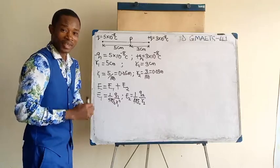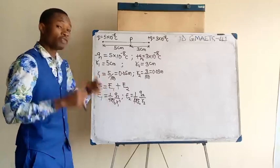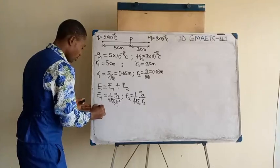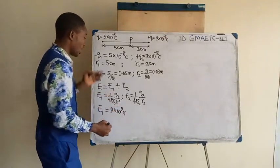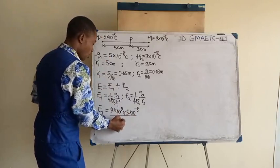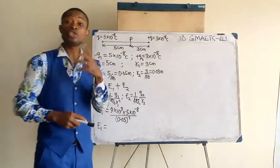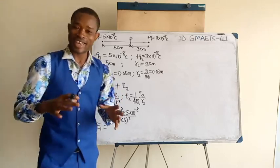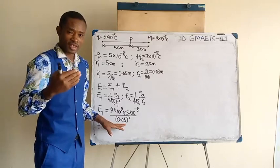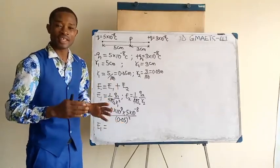Let us solve for E1. I want to do substitution now. I have brought out the formulas here. E1 is 9 times 10 to the power of 9 times Q1, which is 5 times 10 to the power of minus 8, divided by the square of distance R1, which is 0.05 squared. This is what I usually like doing, and that is why I advise my students to take mathematics seriously. I prefer compacting numbers like this to standard form and using the knowledge of indices to work out this without a calculator. 0.05 is the same as 5 times 10 to the negative 2.